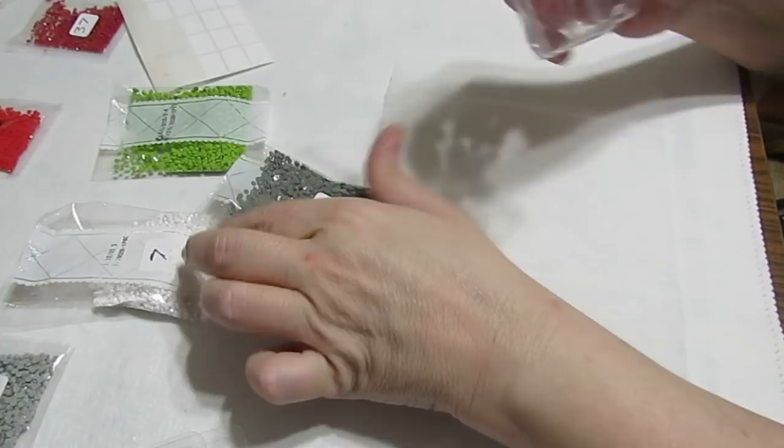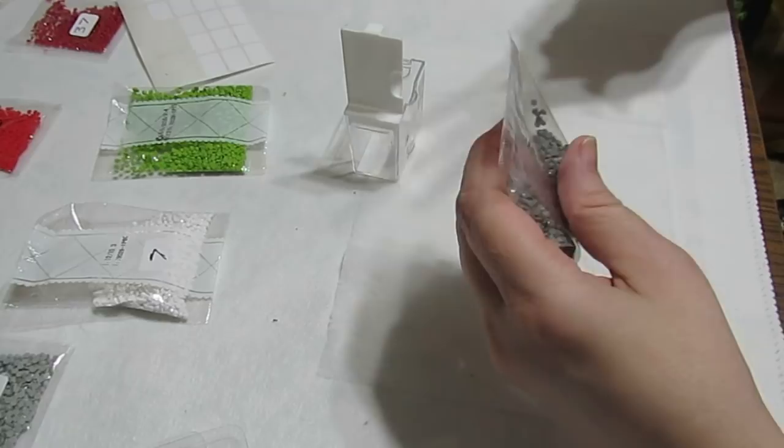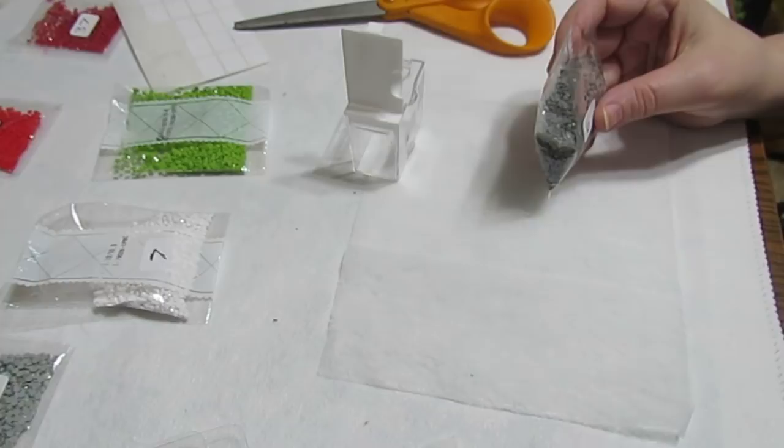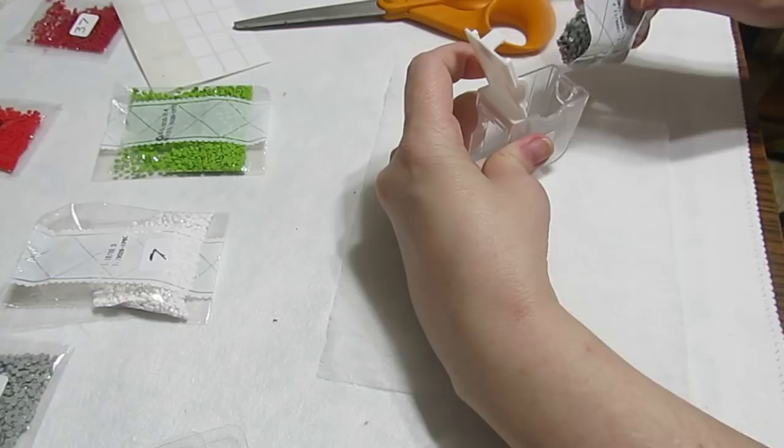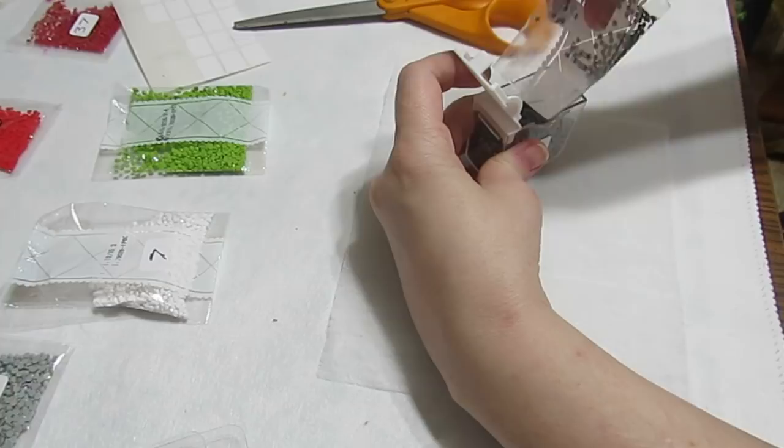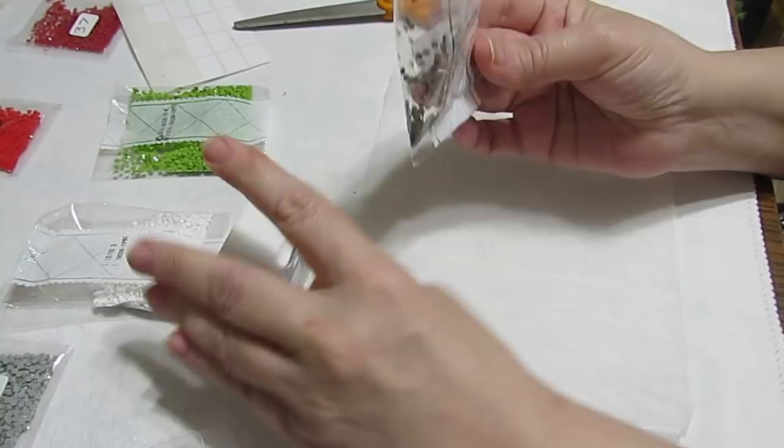I'm using the Elizabeth Ward Storage System. That is my favorite one to use for large paintings because it will hold quite a few diamonds. I'm going to pour what I can into here, and that part is pouring in very easily. This is where the problem is. It's when you get to this part, they're all stuck in there.